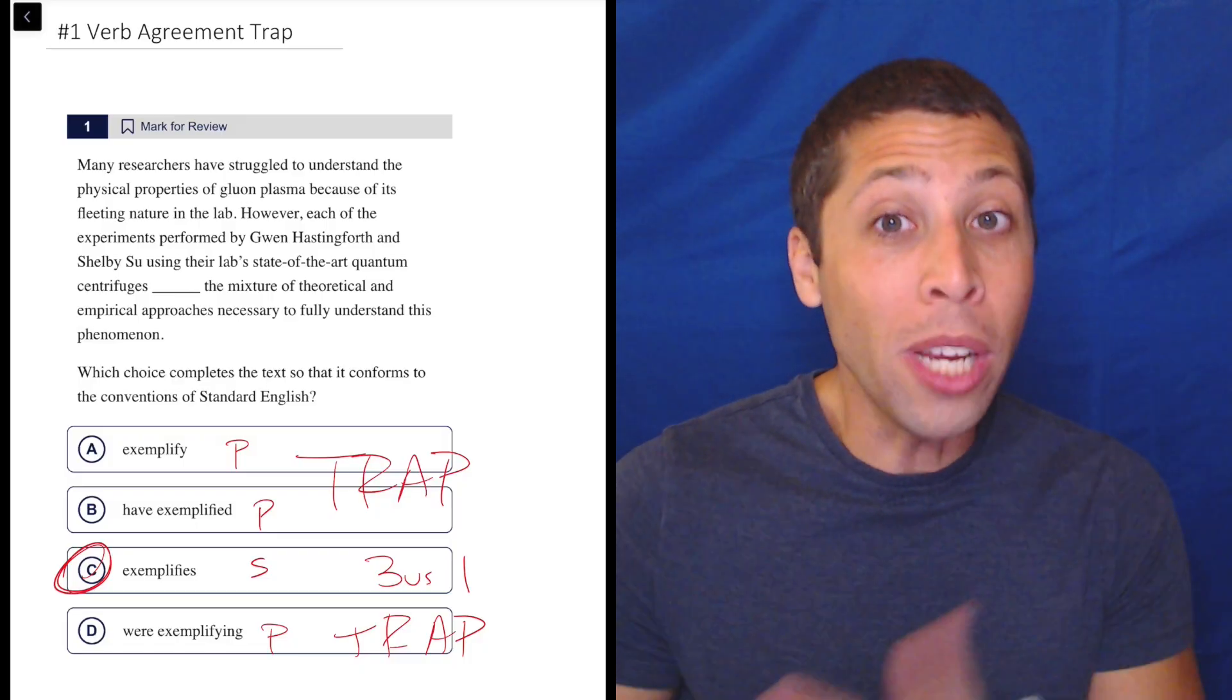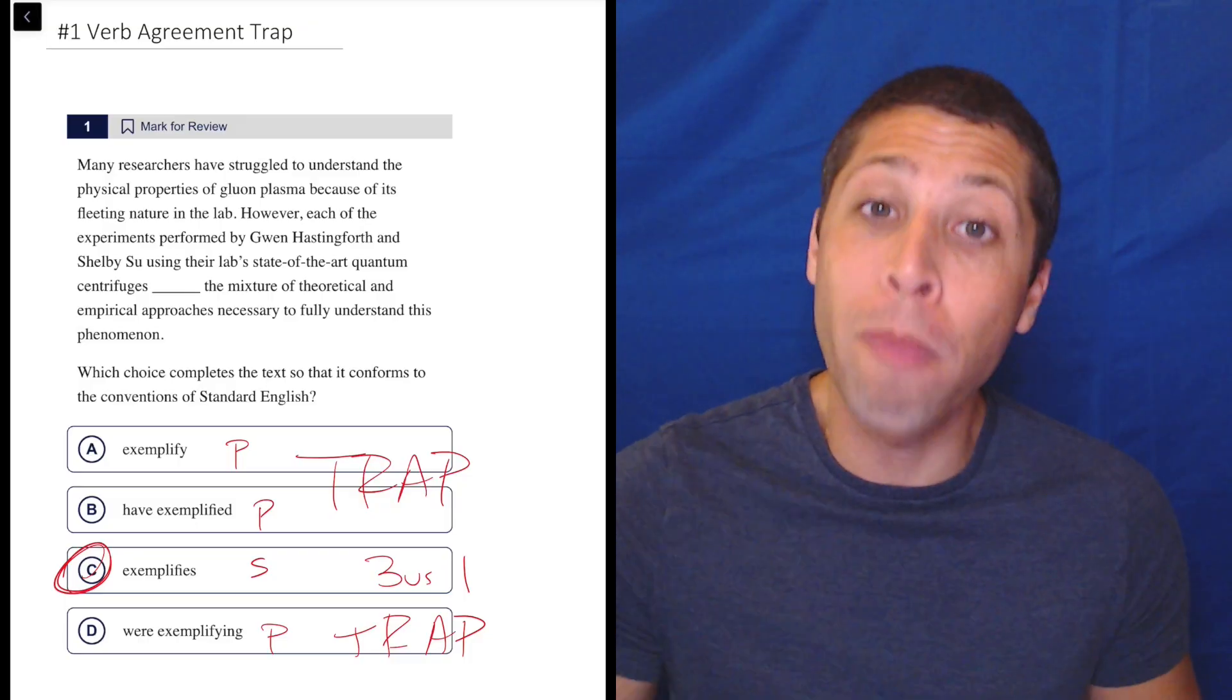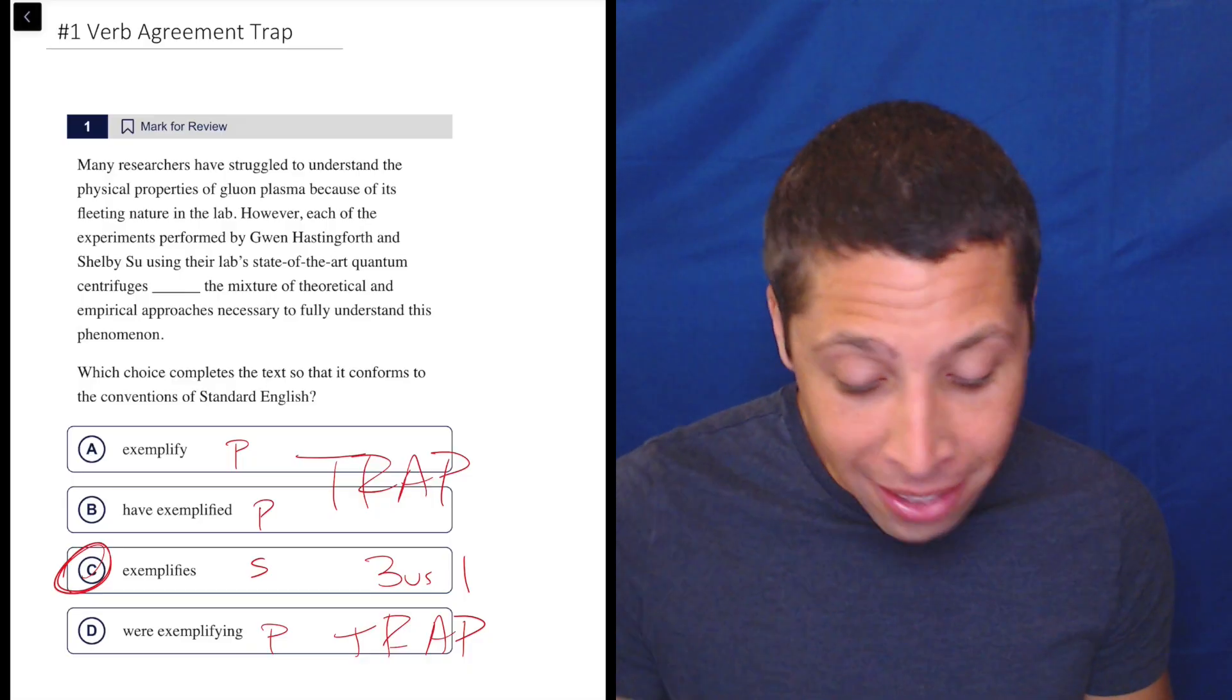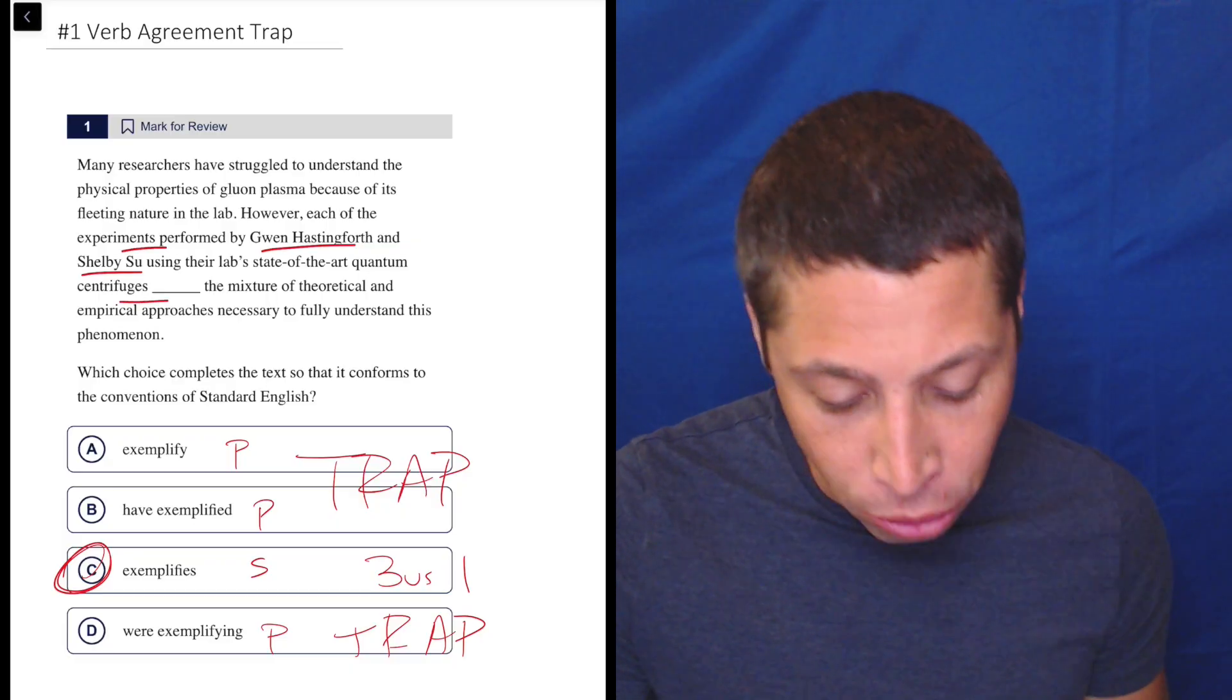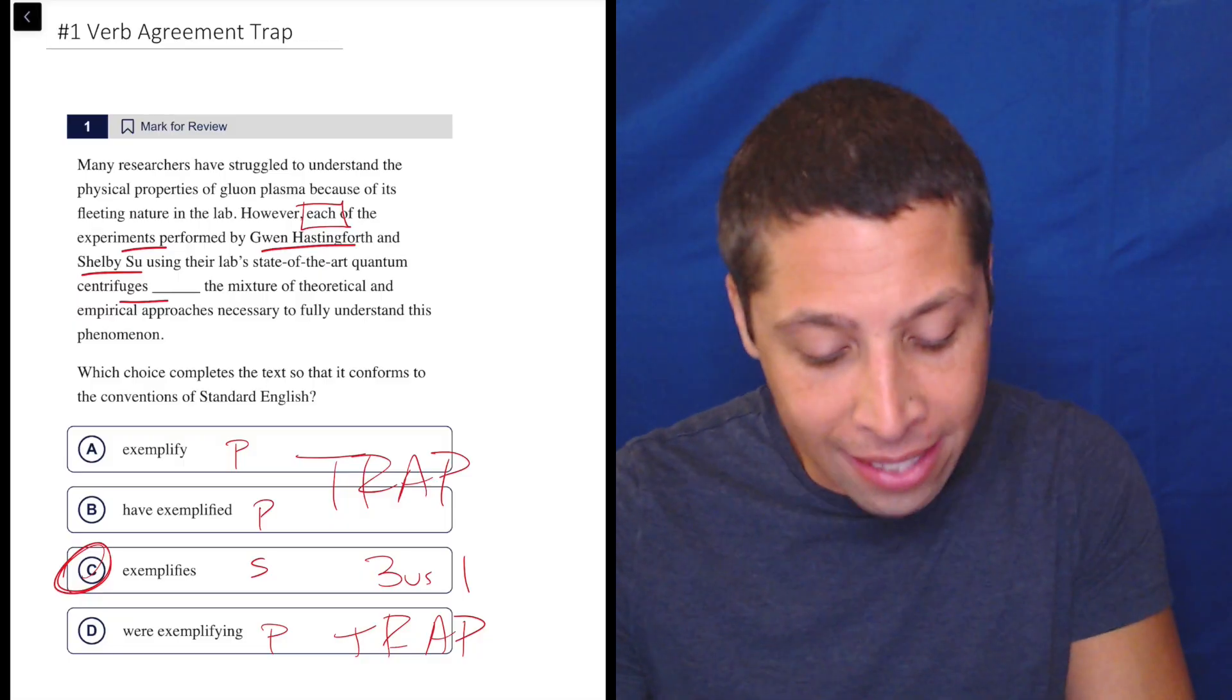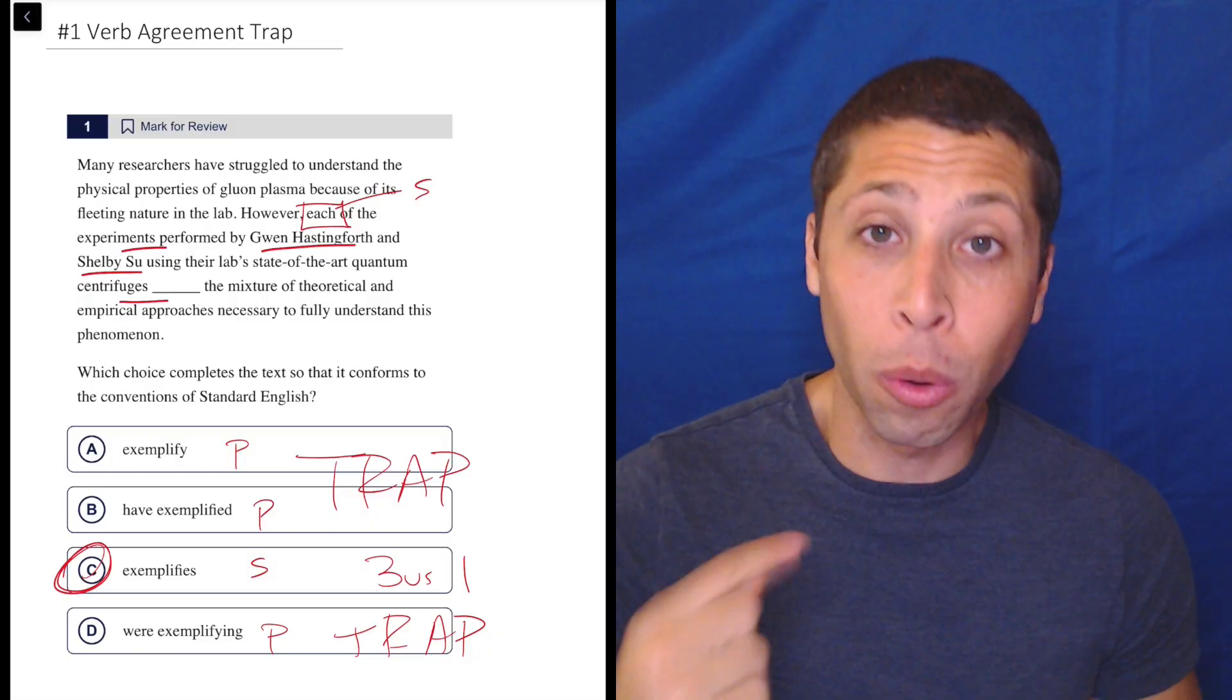Now, if we go to the sentence, we can go looking for a singular subject to match with this singular verb and verify that our little SAT trick here is still going to be based in solid grammar. And if we go in there, we will notice lots of plural things. We've got the two people's names, that seems plural. We have experiments, that seems plural. Centrifuges, that seems plural. But the actual subject here is each, something that we would never have noticed if we were just diving right into the sentence. It's each of the experiments. That is singular. We were talking about those experiments as individual experiments. That is singular, and that is proof that we need choice C.